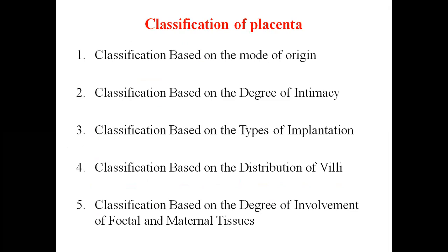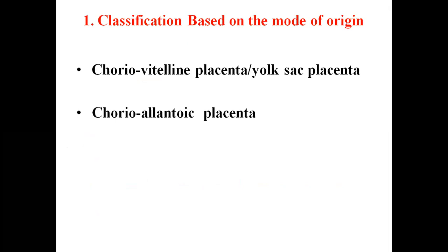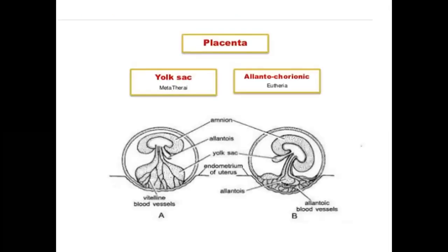Classification of placenta is of five types. The first is classification based on mode of origin. Here, placenta is of two types: chorio-vitelline placenta, also called yolk-sac placenta, and chorio-allantoic placenta. If the placenta develops from the yolk sac, it is called yolk-sac placenta and is found in metatheria. If it develops from the chorioallantois, it is called chorio-allantoic placenta and is found in eutherian animals.